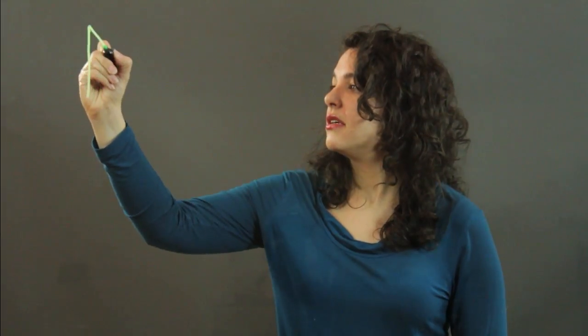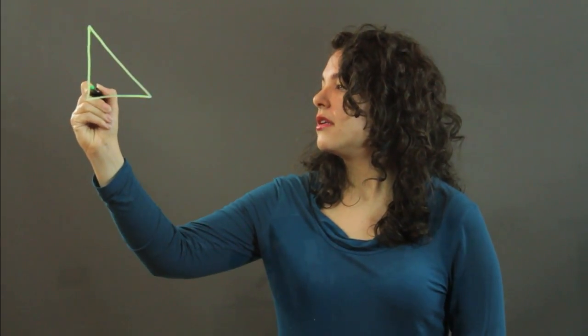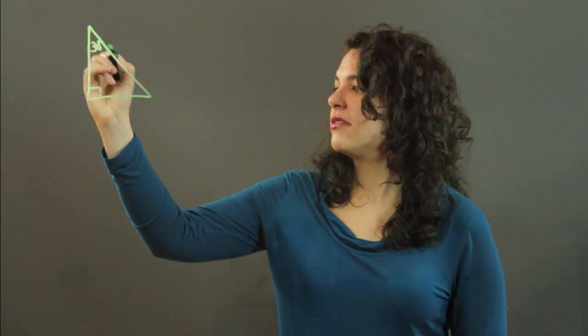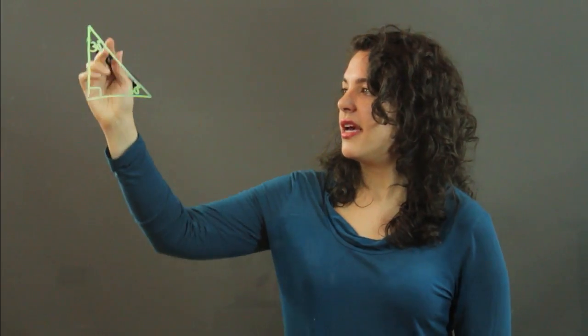We're going to look at two special right triangles. We're going to start with the 30, 60, 90. There's its 90 degree angle. And then it has a 30 degree angle, a 60 degree angle. Hence its name, 30, 60, 90.